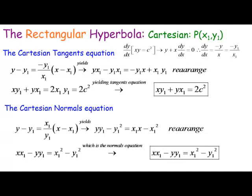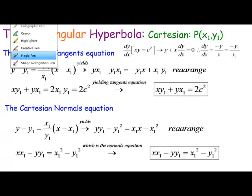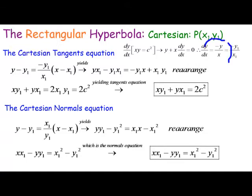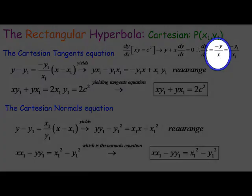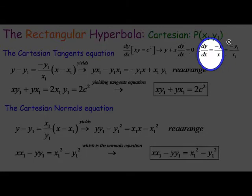We've now rotated to the other form of the rectangular hyperbola — xy equals c squared. Using implicit differentiation on xy equals c squared, dy/dx is equal to minus y on x.